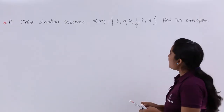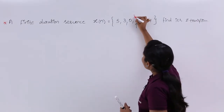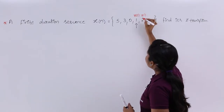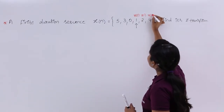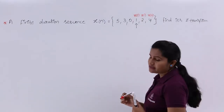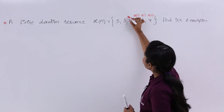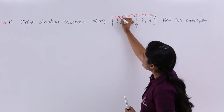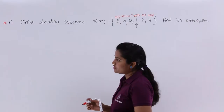So here, the sample at the arrow mark is X of 0. The samples to the right of X of 0 are X of 1 and X of 2, and the samples to the left are X of minus 1, X of minus 2, and X of minus 3. According to that, you need to consider the equation.